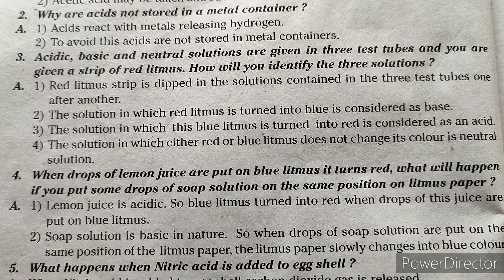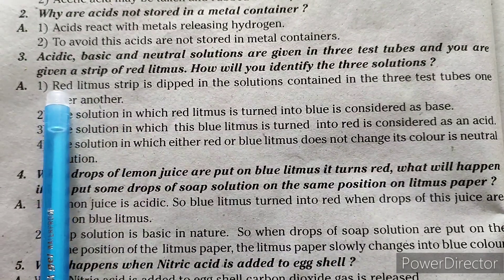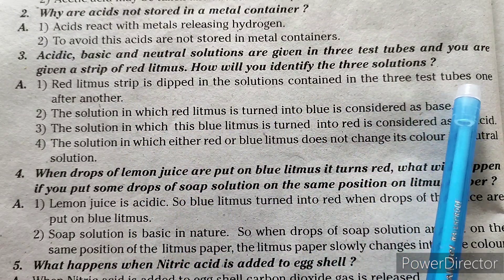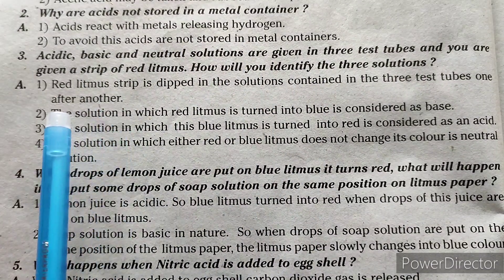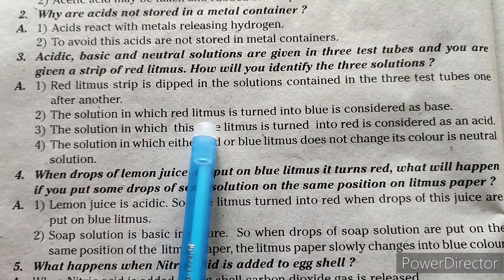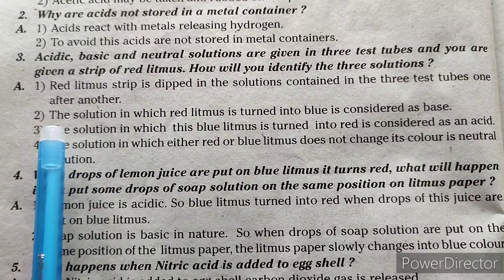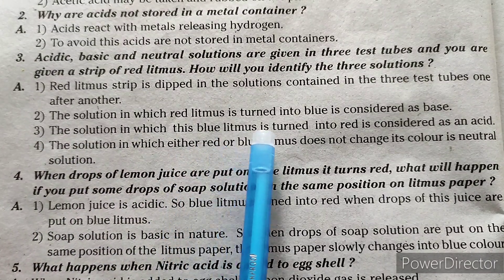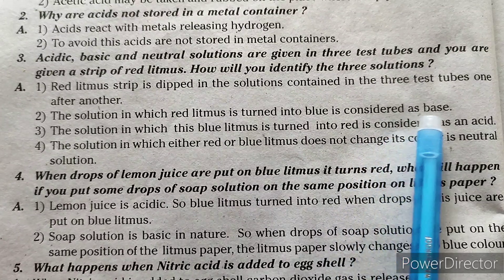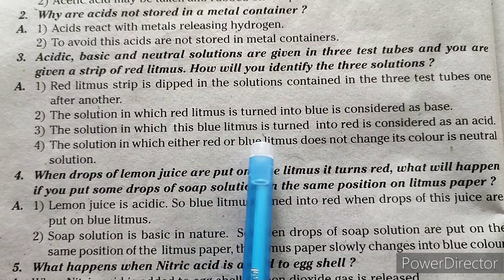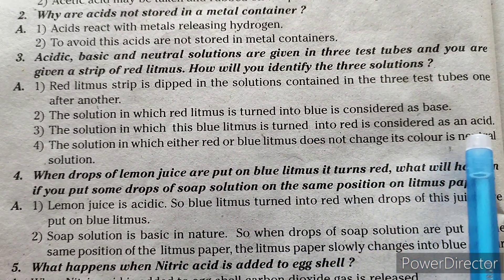Third question: acidic, basic, and neutral solutions are given in three test tubes and you are given a strip of red litmus. How will you identify the three solutions? Answer: red litmus strip is dipped in the solutions in the three test tubes one after another. The solution in which red litmus turns blue is considered as base. The solution in which blue litmus turns red is considered as an acid.